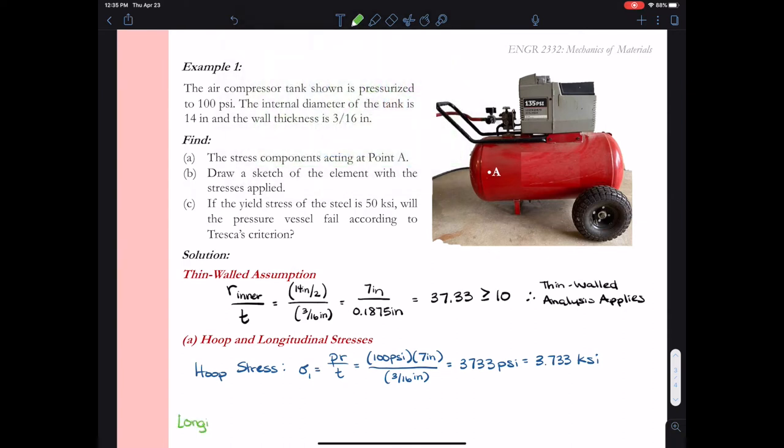I'll repeat my calculations for the longitudinal stress. The longitudinal stress, we gave the variable sigma 2. And this was equal to a value of PR over 2T, the pressure times the radius over 2 times the thickness. I can go ahead and plug in my values again.